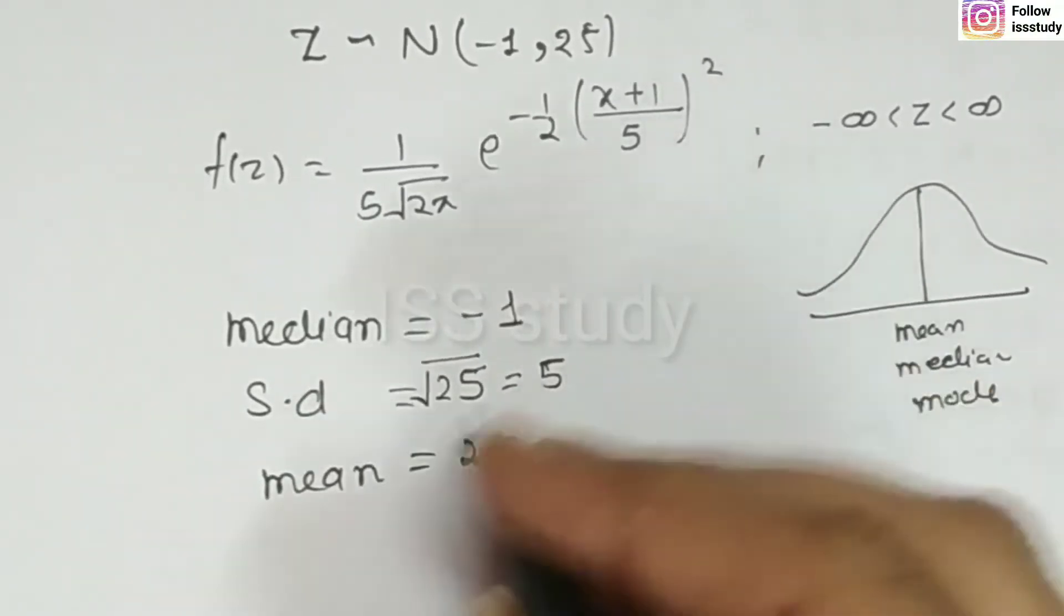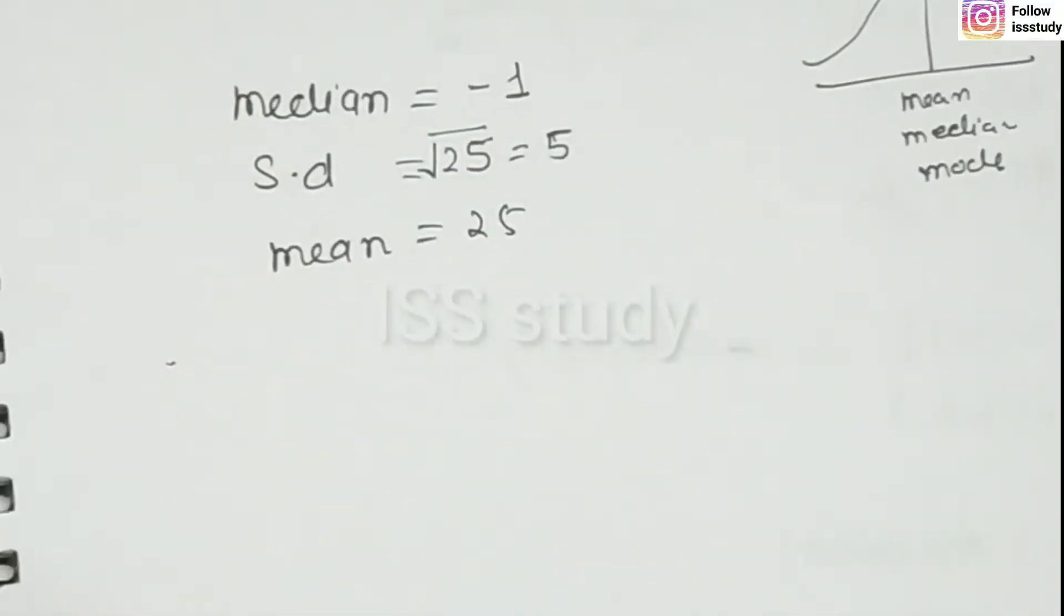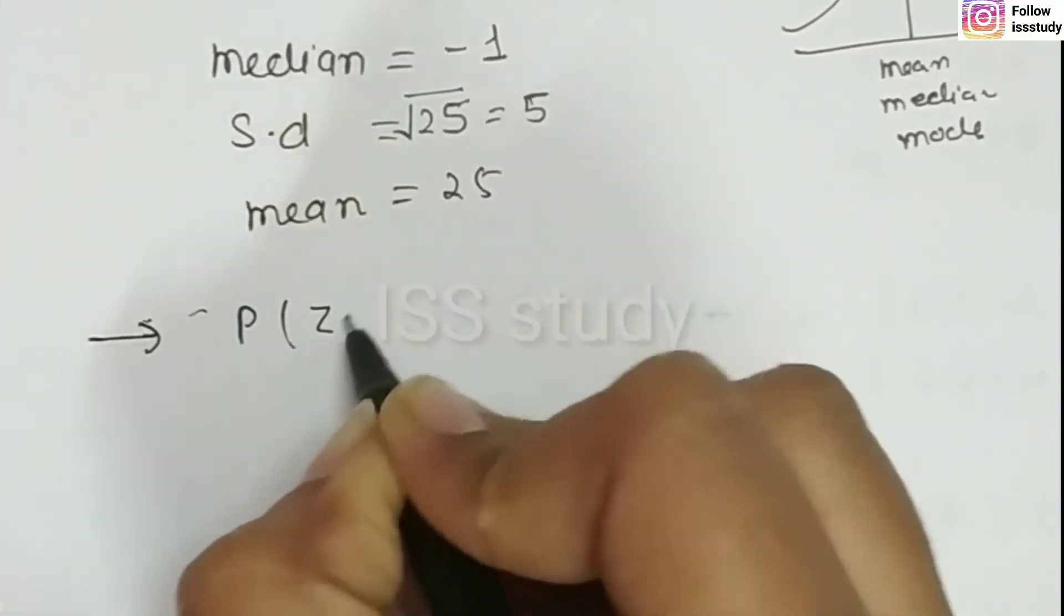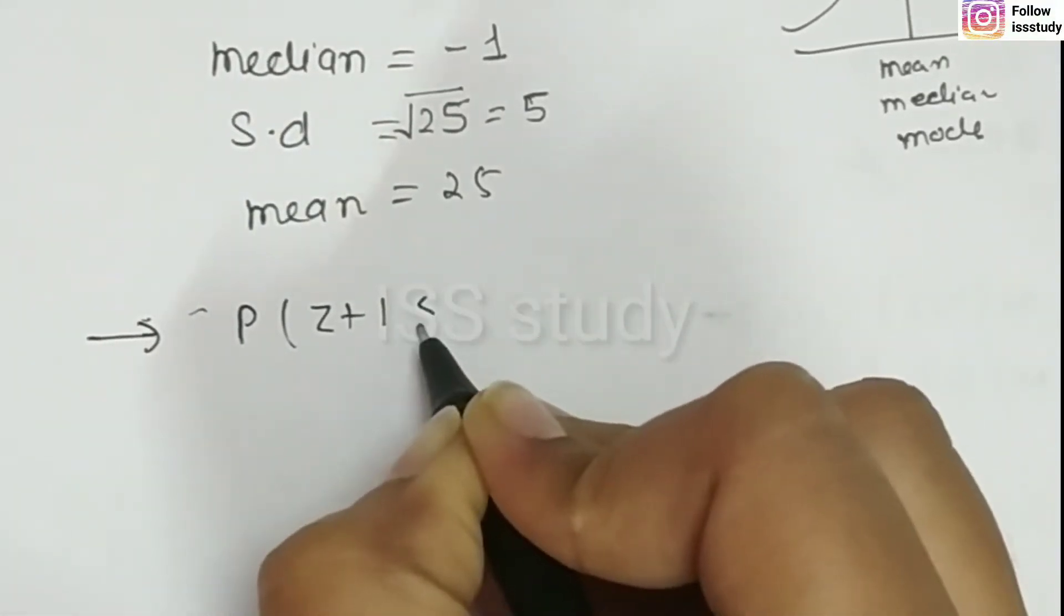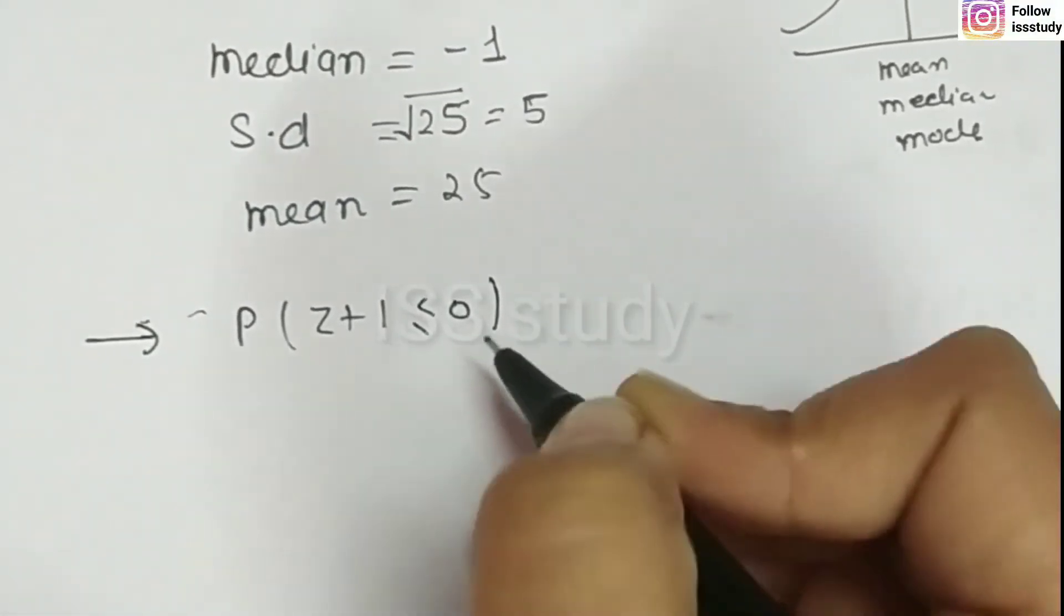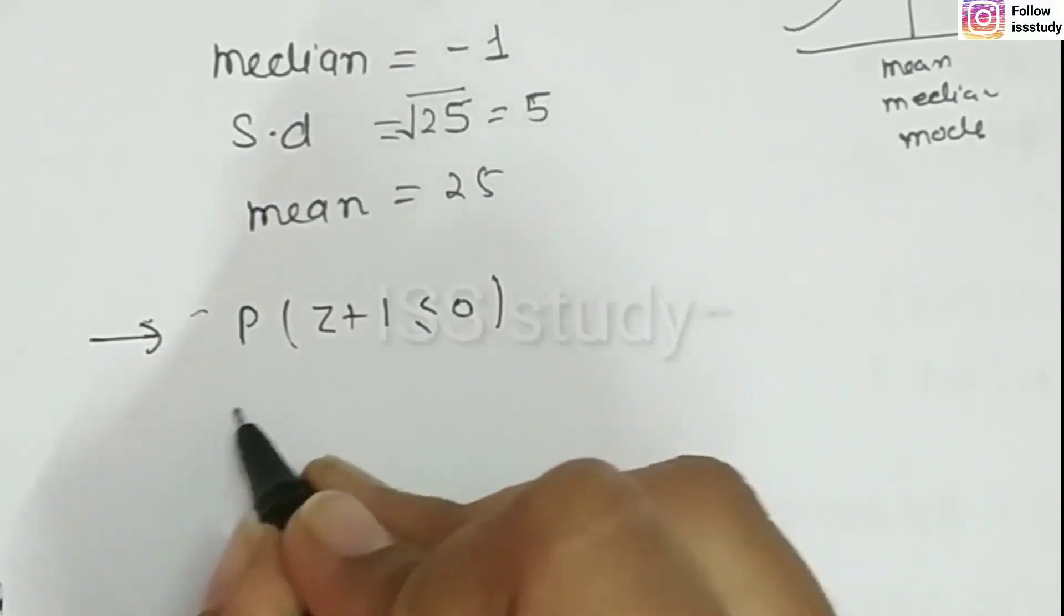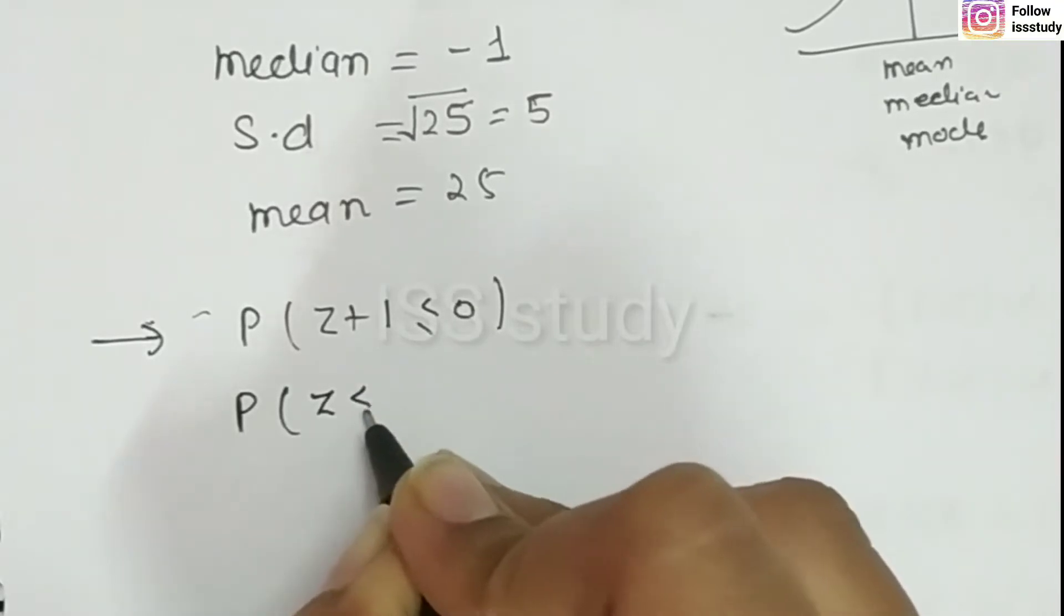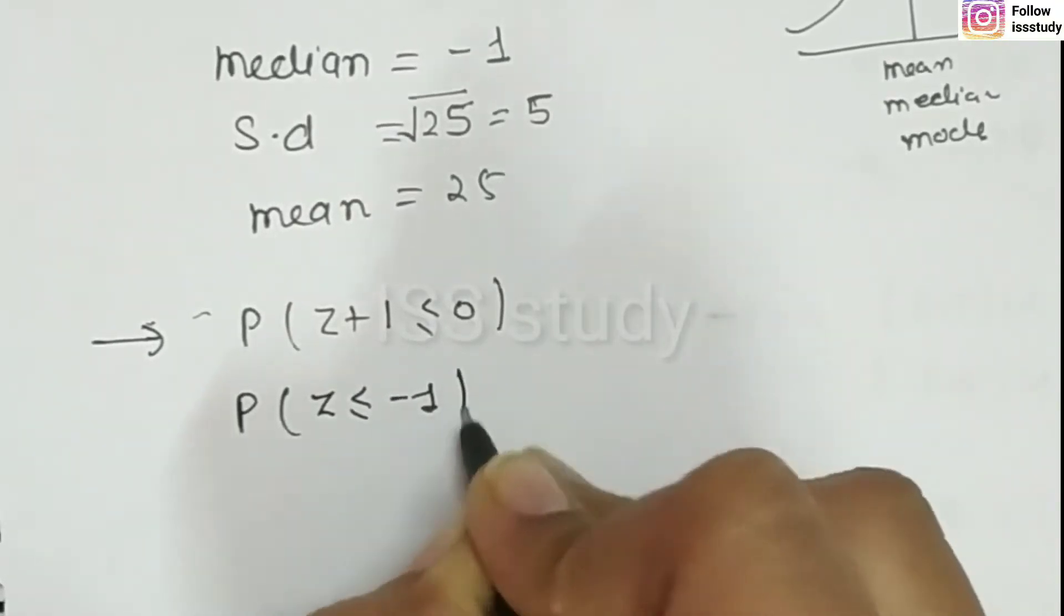Now, in the next part, find the probability. Now, you're talking about probability here. So, you have to find probability here: z plus 1 is less than equal to 0. Now, this means, what can we do? We can put 1 on that side. So, this means that z is less than equal to minus 1.